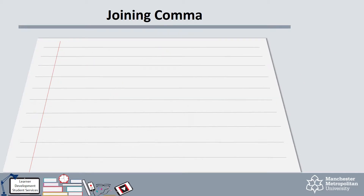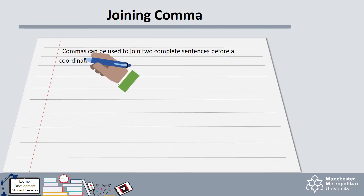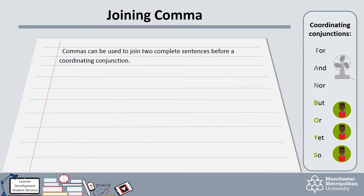To build fluency into your writing and to demonstrate the relationships between your ideas, you can link your sentences together with a comma and a coordinating conjunction. Coordinating conjunctions are for, and, nor, but, or, yet, and so. You can use the acronym FANBOYS to help you remember this.